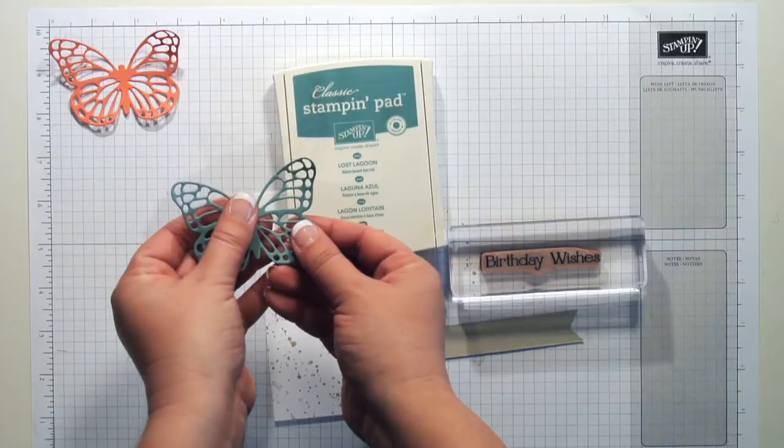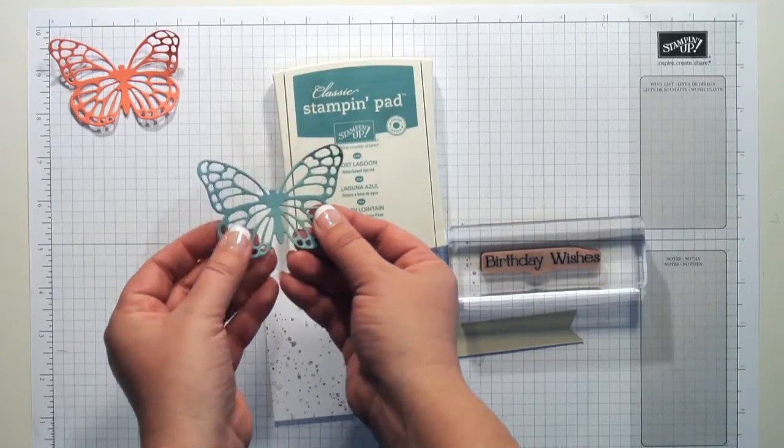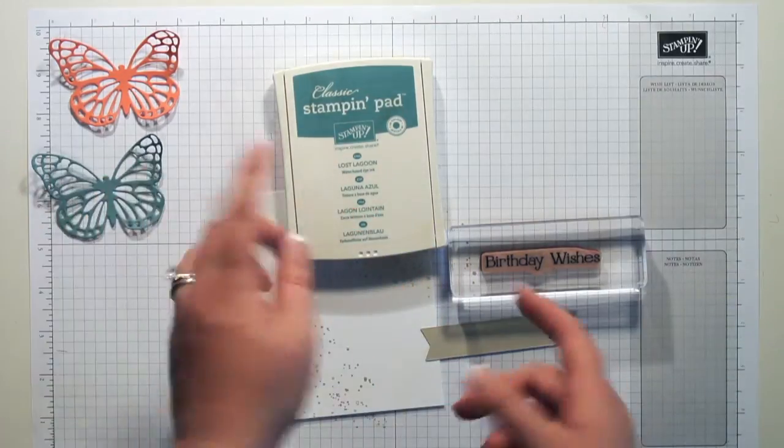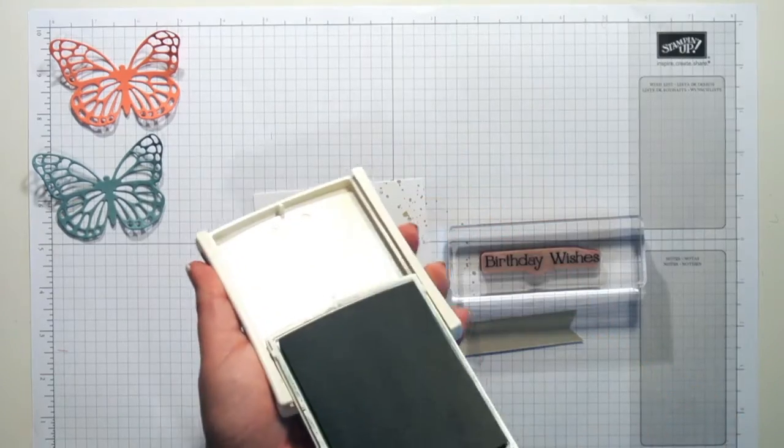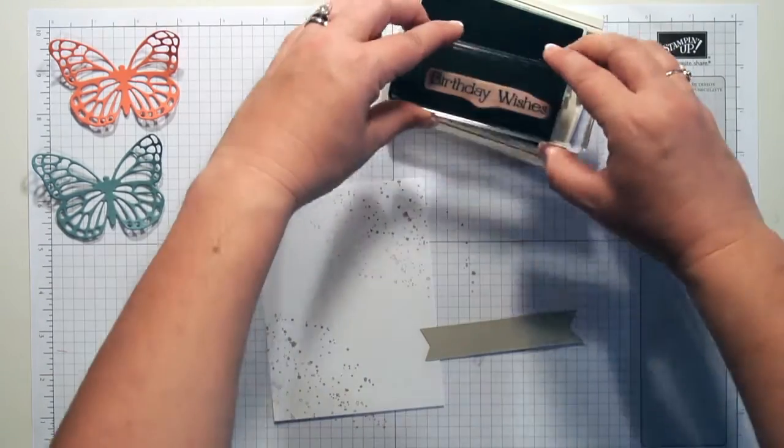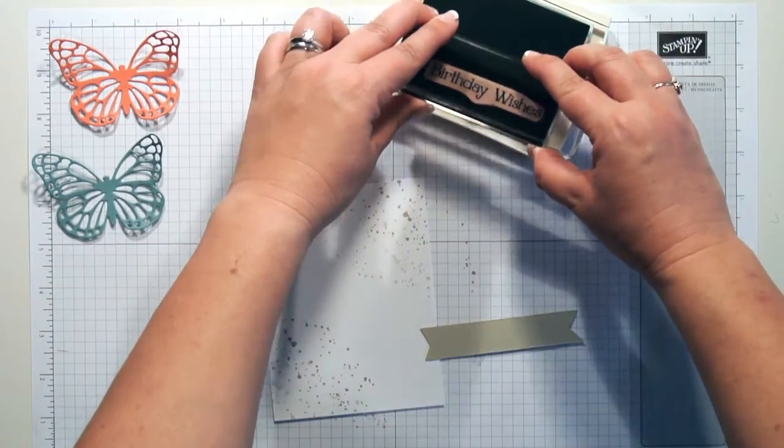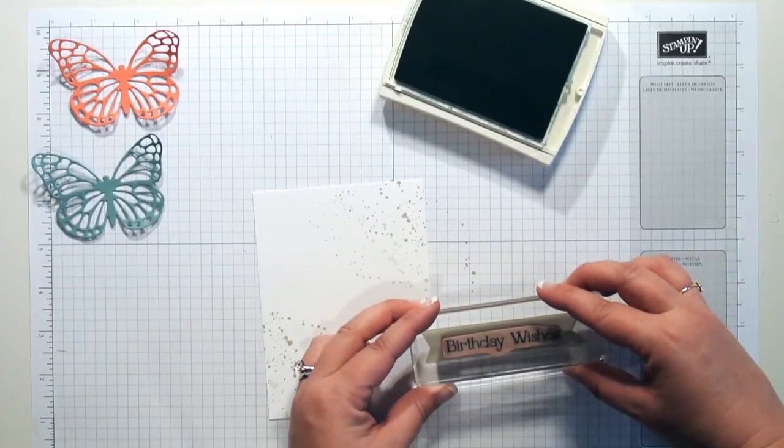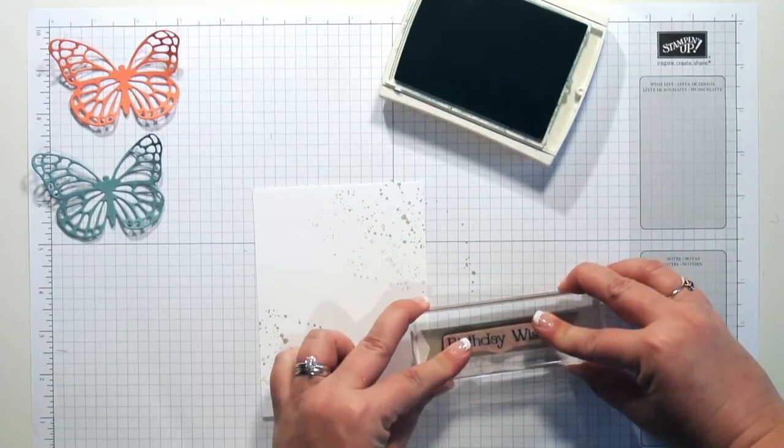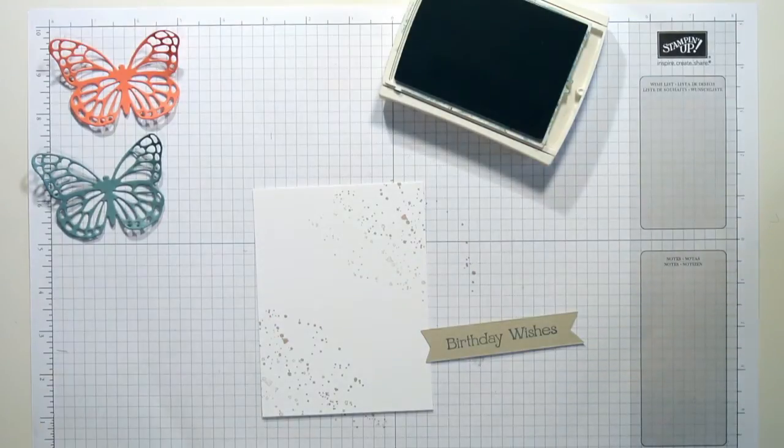And the greeting I'm going to stamp in Lost Lagoon because if you remember when we used the cardstock for the butterfly, this is Lost Lagoon cardstock. So again, I know my Lost Lagoon ink is going to match really well. So let's ink it up and on my banner, just go straight down and straight up. Perfect.